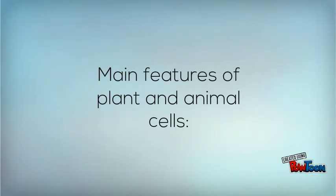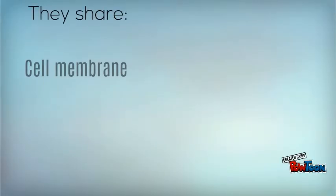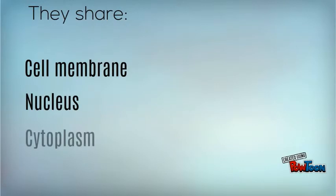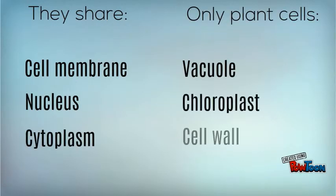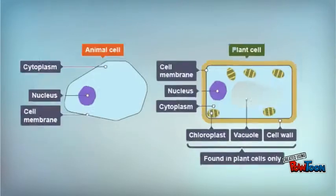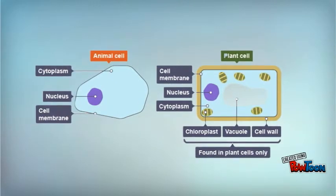Plant and animal cells both share a cell membrane, nucleus, and cytoplasm, but only plant cells have a vacuole, chloroplast, and cell wall. Here is a diagram that compares the two cells.